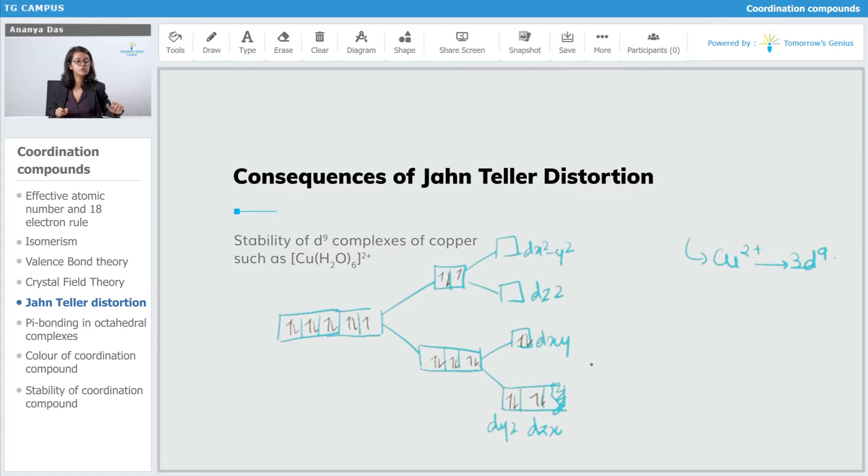Once these are filled completely, then only you can move to dz² and dx²-y². The electrons which are present originally in T2g cannot go into dz² and dx²-y².